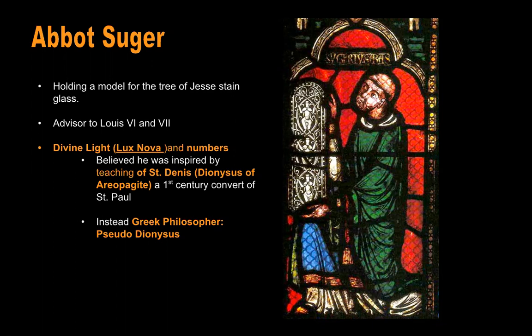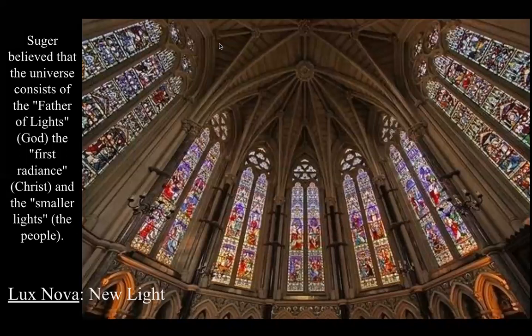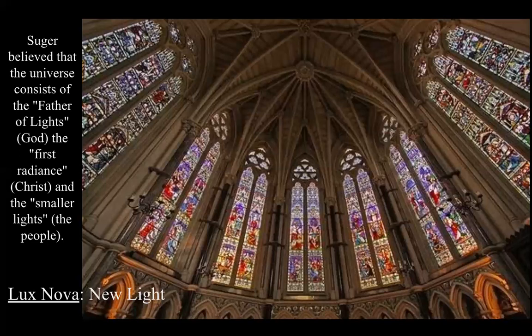Suger was an advisor to Louis VI and Louis VII. In an image at Saint-Denis, he's actually holding a stained glass window, proving he's connected to this idea of divine light — Lux Nova. Suger believed the universe consists of the father of light (God), then Christ, and then the smaller lights are the light of the people. There is the supreme light, then a slightly lesser light (Jesus), then the smallest lights are everyone else.